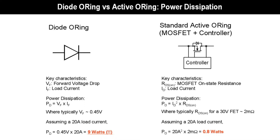The active oring solution consists of an oring MOSFET and an IC controller. In normal operation, the controller keeps the MOSFET fully saturated, so the power loss is the RDS_on of the MOSFET times the current squared.